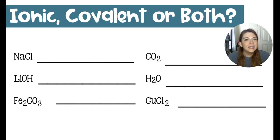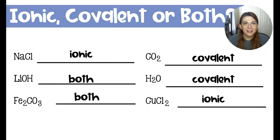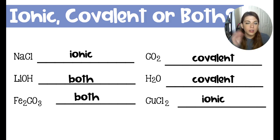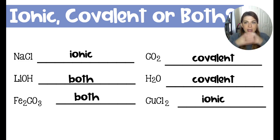To finish this lesson, see if you can figure out whether each compound has ionic bonds, covalent bonds, or both. Sodium chloride, or NaCl, is ionic — sodium is the metal, chlorine is the nonmetal, and they transfer electrons. Then we have lithium hydroxide: the O and the H in hydroxide are covalently bonded together, and then that ion ionically bonds to the lithium. So within the ionic bond, you have a smaller covalent bond.